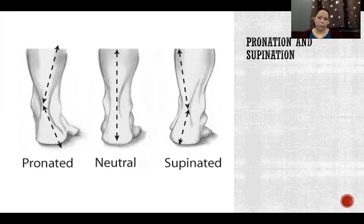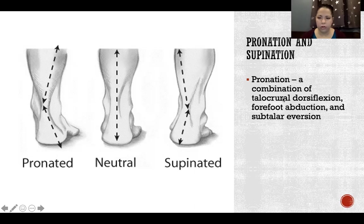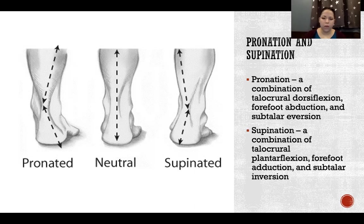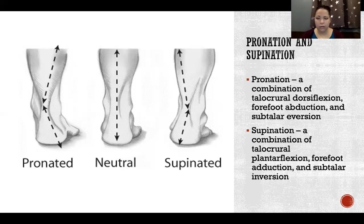Pronation and supination: this picture shows the right foot in all three examples — during pronation, neutral position, and supination. Pronation is a combination of talocrural dorsiflexion, forefoot abduction, and subtalar eversion. Supination is the exact opposite: talocrural plantarflexion, forefoot adduction, and subtalar inversion. Pronation and supination are normal functions of the ankle complex that happen alternately during gait, so our ankles need to be able to have these functions.